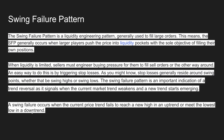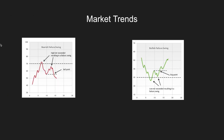The swing failure pattern is an important indication of a trend reversal — it signals when the current market trend weakens and a new trend starts to emerge. A swing failure occurs when the current price trend fails to reach a new high in an uptrend or meet the lowest low in a downtrend. Here's the bearish SFP diagram: price came up, made a lower high, ended up making a lower low. You want to be going short right around here when we break this level, with a stop loss above the wick of the high, targeting the structure break below.